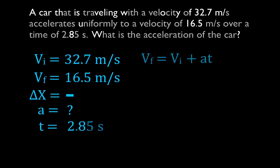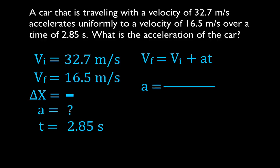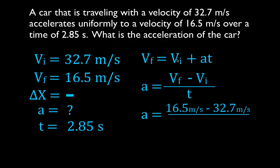Let's bring our information and our equation together. We have three known variables and we're solving for the fourth — the acceleration. I like to rearrange the equation before plugging values in. That means the acceleration equals the final velocity minus the initial velocity, divided by the time — our standard definition of acceleration: change in velocity over time. Plugging the values in: 16.5 minus 32.7 divided by 2.85 seconds gives an acceleration of minus 5.68 meters per second squared. The minus sign tells us it's slowing down — positive velocity with negative acceleration means the object's speed is decreasing.